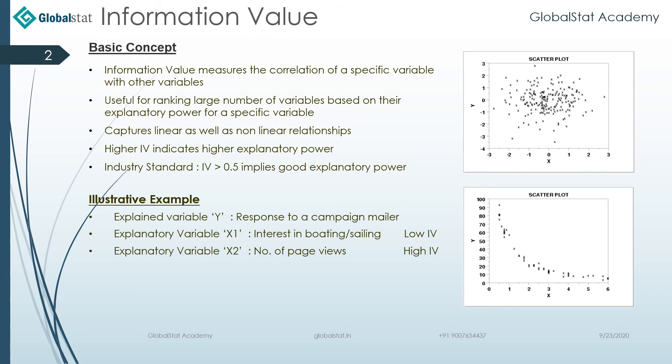In general, when a company — say, for example, a computer giant — is sending a response mailer for a campaign, we are going to build a model on historical data. We have seen in the past that when a computer giant sends a response campaign mailer to a particular customer, that customer will definitely look into those pages of the computer website to see what product they need to buy.